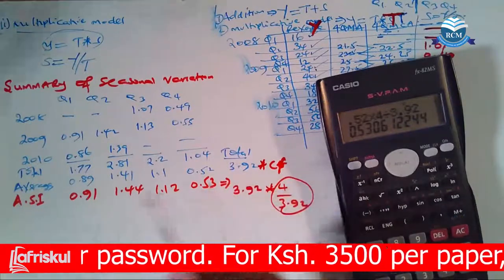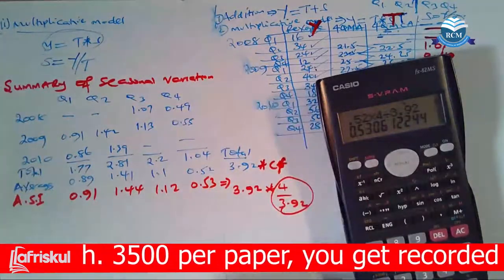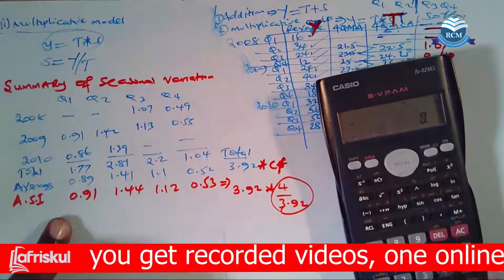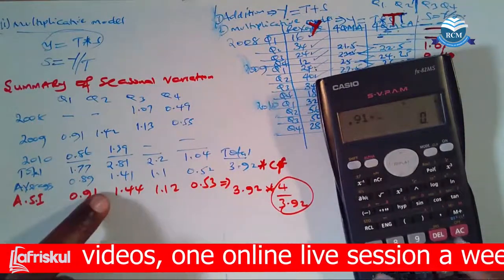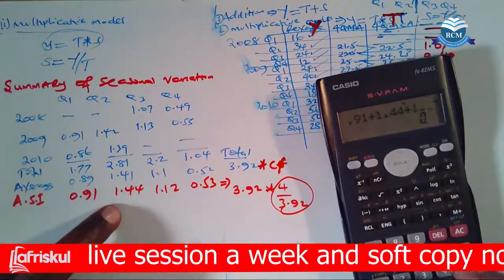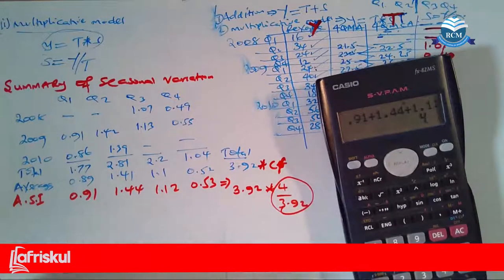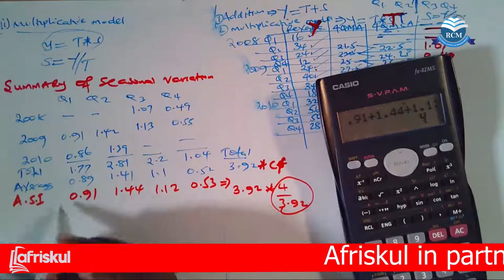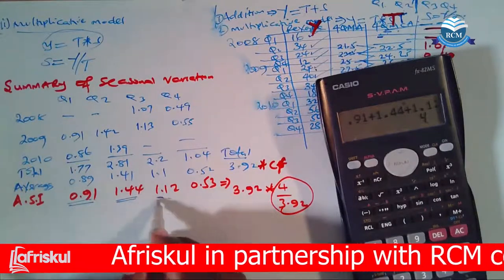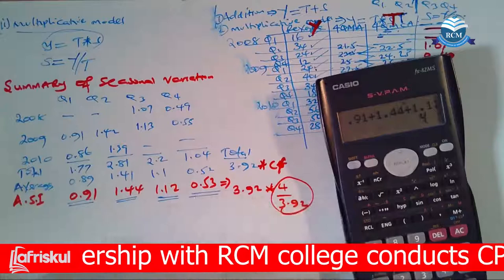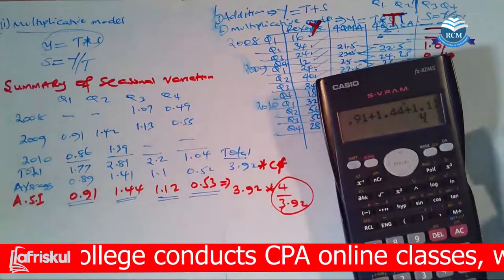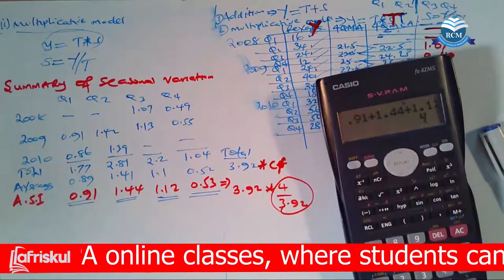So then at the end of the day, if you need, you can again come and give us the summation of these ASIs. So we have 0.91 plus 1.44 plus 1.12 plus 0.53, which gives me exactly 4. So these adjusted seasonal indices are the ones that your examiner had wanted you to ascertain.